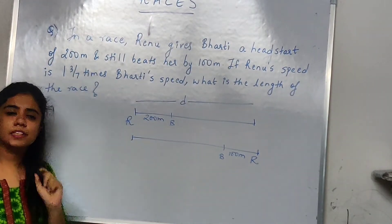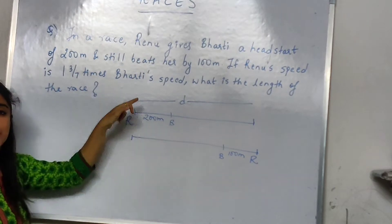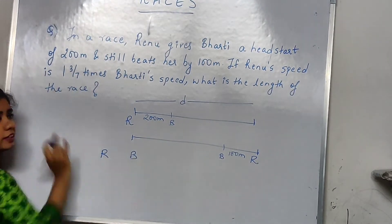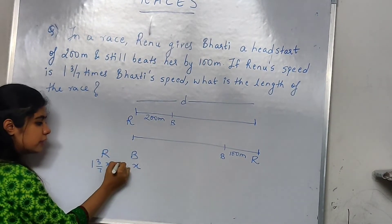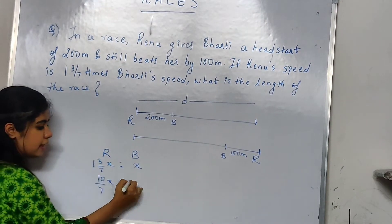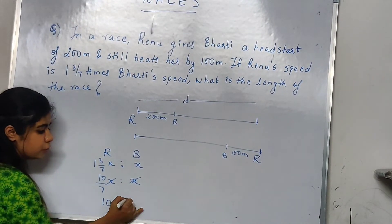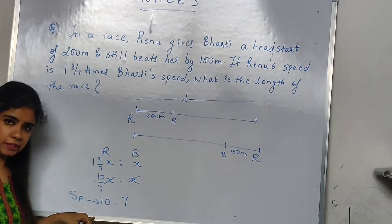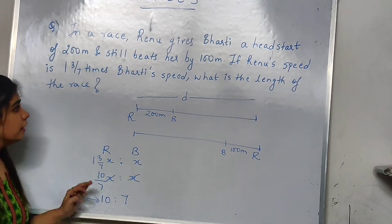They have given one important condition: Renu's speed is 1 and 3/7 times Bharti's speed. If Bharti's speed is X, then Renu's speed is (10/7)X. So the ratio of Renu's speed to Bharti's speed is 10 to 7. That means when Renu covers 10 meters, Bharti will cover 7 meters.